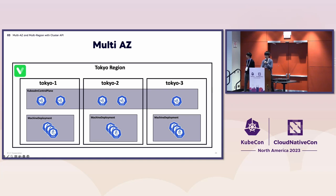Let me explain our multi-AZ cluster design. We take different strategies between control plane nodes and worker nodes. For worker nodes, users can specify the availability zone per node pool. So if users create multiple node pools with different AZ settings, they can distribute their nodes and achieve AZ outage toleration. In Cluster API, our node pool is implemented with a MachineDeployment custom resource, so multi-AZ is achieved with multiple MachineDeployments distributed across multiple AZs.